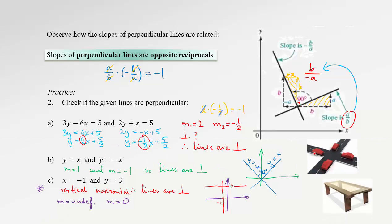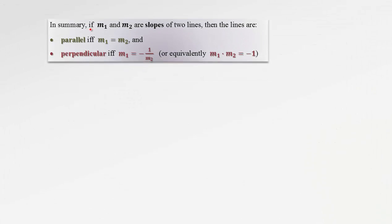Here are two examples of perpendicular lines in real life: an intersection — most intersections are perpendicular, but not all — and furniture, which has lots of perpendicular lines and right angles. In summary, if M1 and M2 are slopes of two lines, the lines are parallel if and only if M1 equals M2. The lines are perpendicular if and only if the slopes are opposite reciprocals, or equivalently, M1 times M2 equals negative 1. These two statements are equivalent.